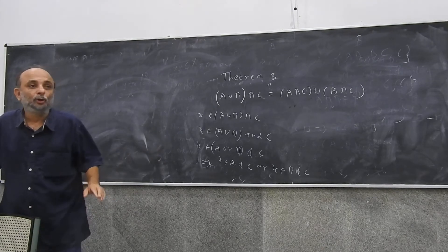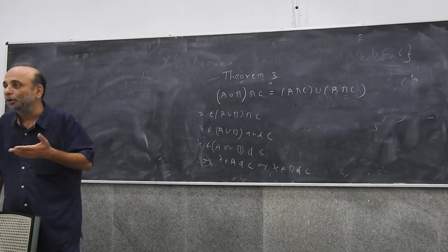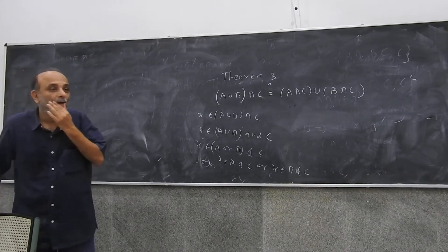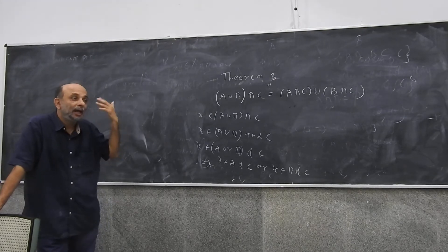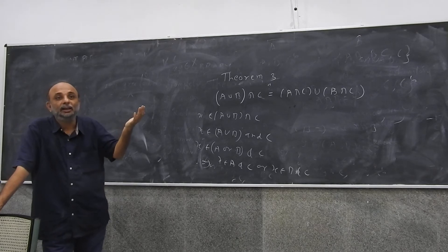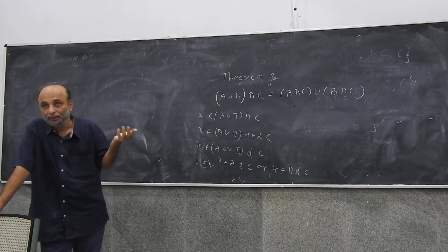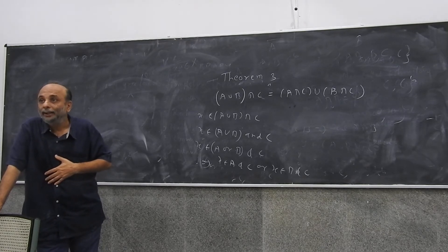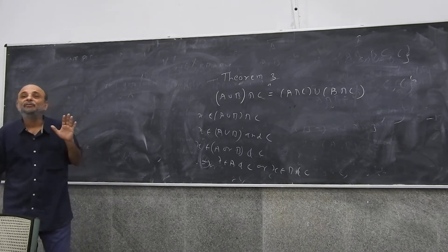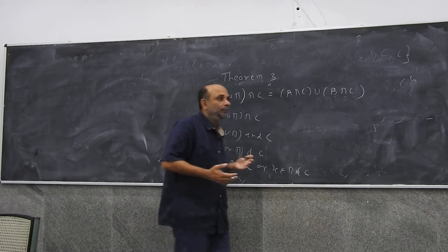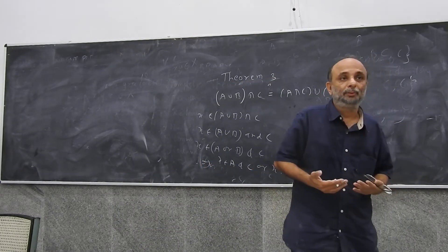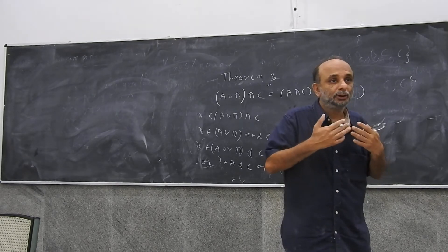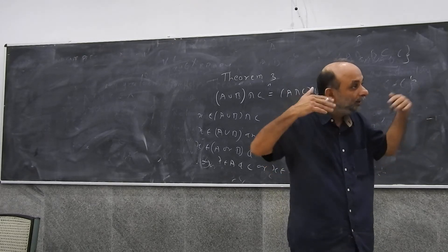Your microeconomics class would have been very abstract — preference orderings, consumption bundles, sets of consumption bundles. It is important that we develop the habit of thinking correctly and rigorously about abstract entities. That is why we are here and that is why we teach mathematical economics at all. It might seem far-fetched, but these are critical skills needed to understand the real world better.